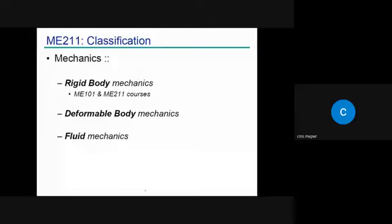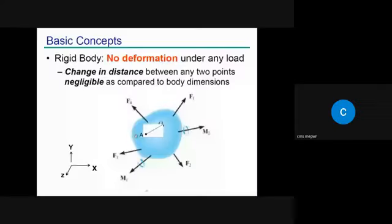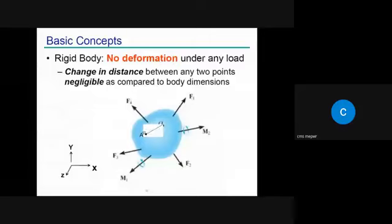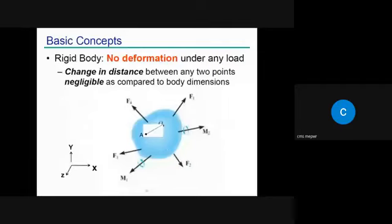Ideally speaking there is no perfectly rigid body in the universe, but for practical purposes, if the deformation produced in an object is negligible compared to the overall size of the object, we consider it a rigid body. For example, if we have an object with two points A and O, and the change in length AO is negligible compared to the overall dimensions of the object, that object is considered rigid.